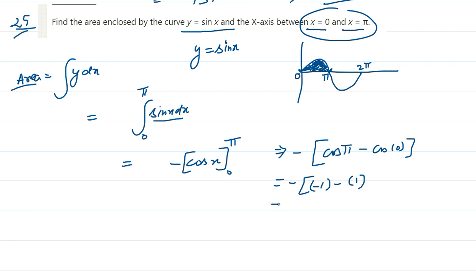So you will get cos 180. The value of cos 180 is minus 1, minus cos 0, and the value of cos 0 is 1. So solving this: minus 1 minus 1 is minus 2, and minus times minus becomes plus. So the area is simply 2, which is the answer for this question. Thank you very much.